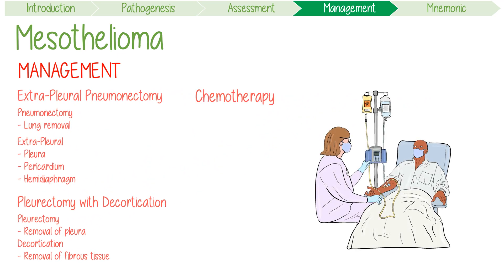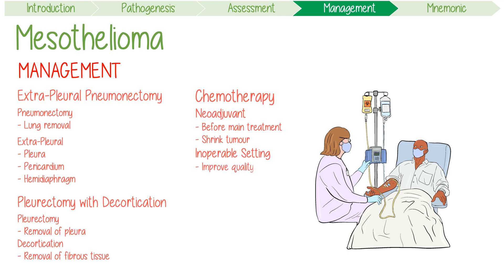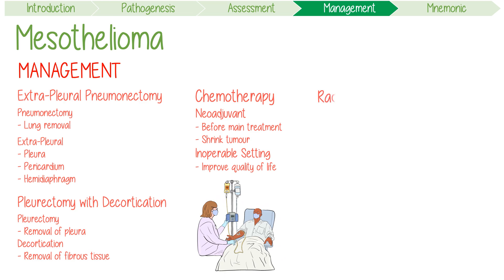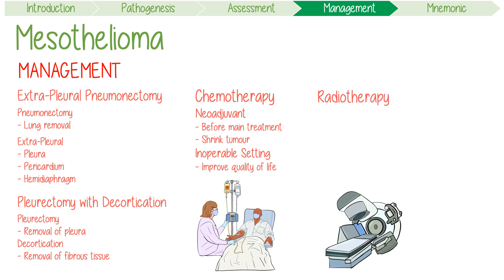Chemotherapy can be given as a neoadjuvant option before surgery — neoadjuvant describing the administration of therapeutic agents before the mainstay treatment, in this case surgery, in order to shrink the tumour. Chemotherapy also has a role in the inoperable setting or recurrence, attempting to improve quality of life and survival. Radiotherapy can be given post-operatively following an EPP as adjuvant therapy — meaning management after the mainstay treatment to prevent recurrence. Like chemotherapy, it can also be used in the palliative setting to improve symptoms like pain or shortness of breath.